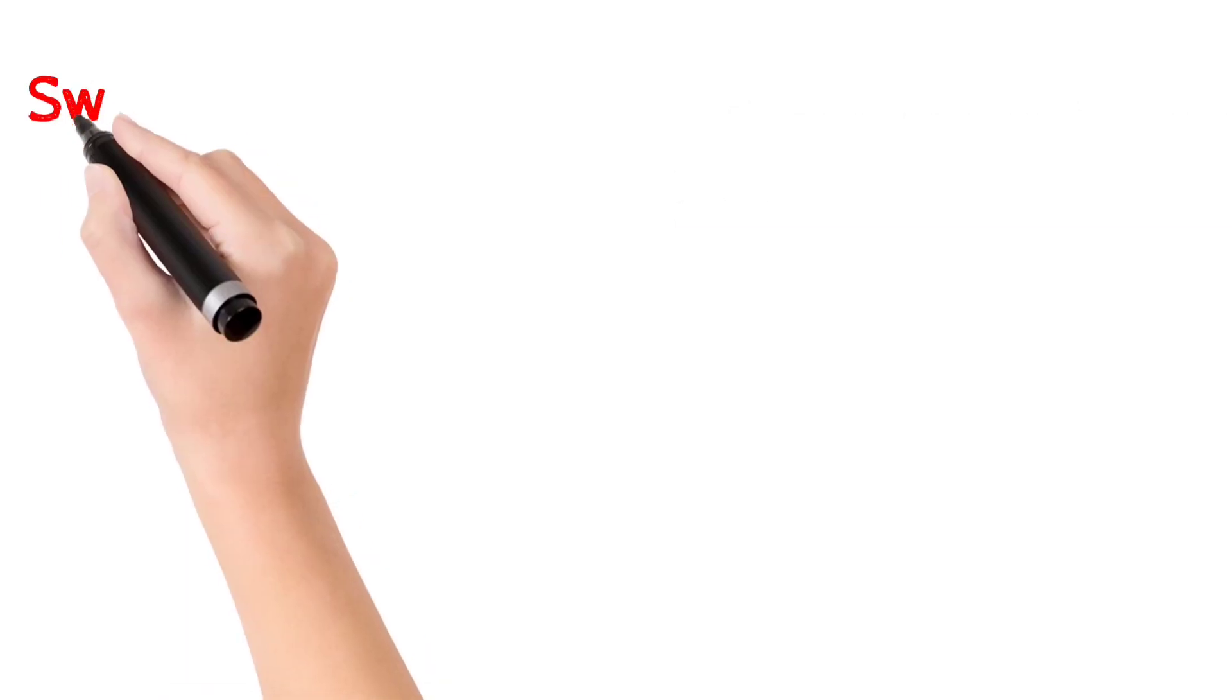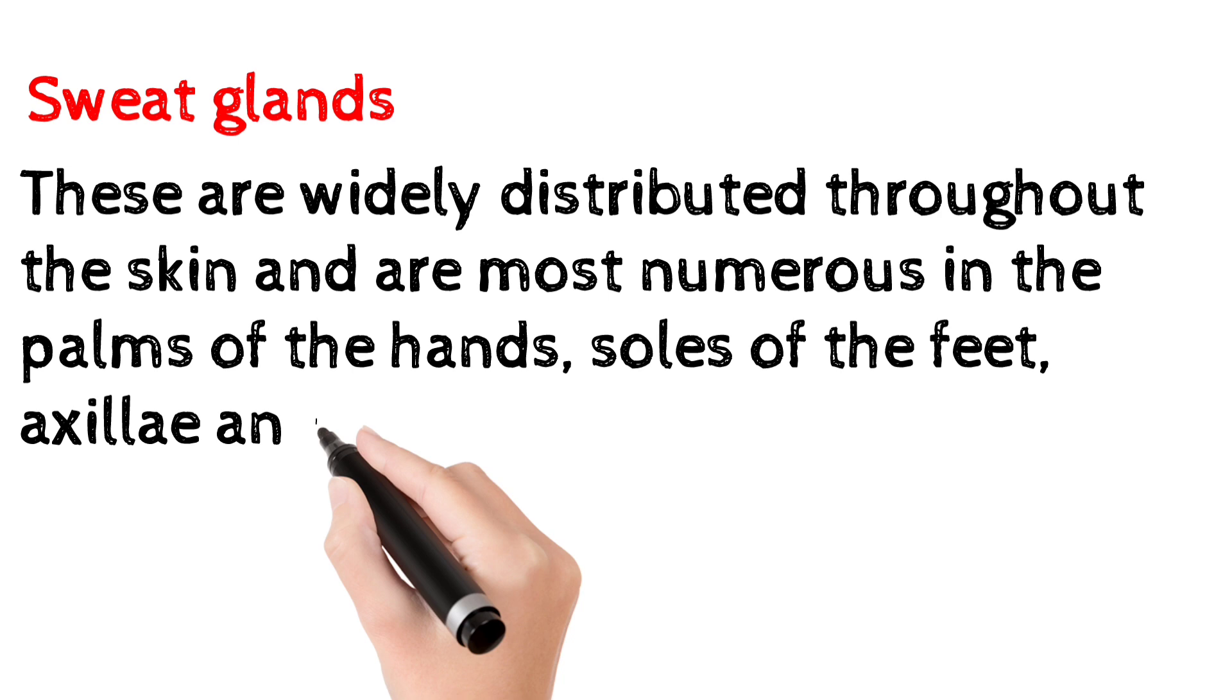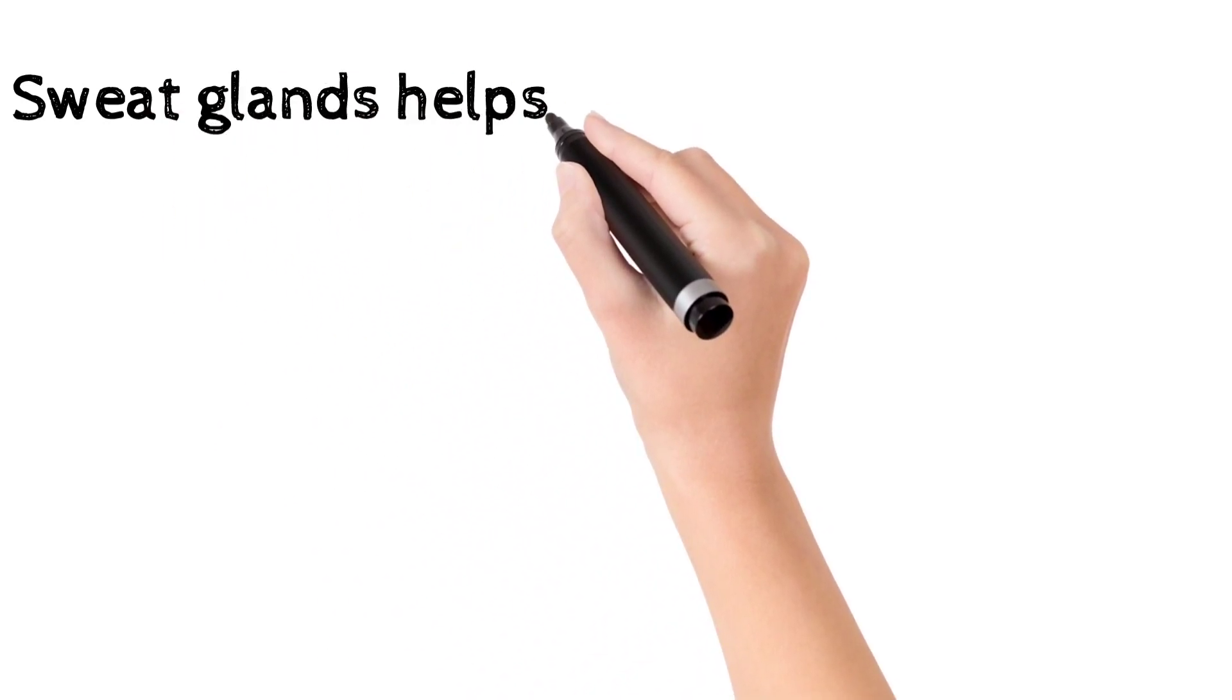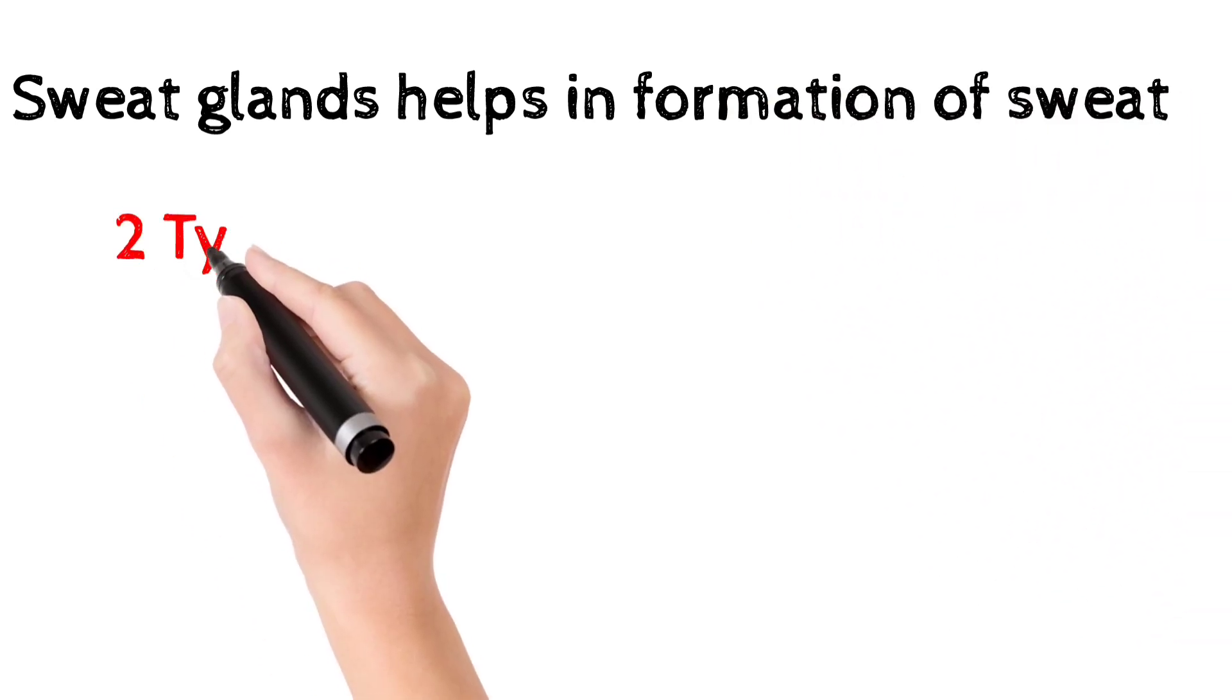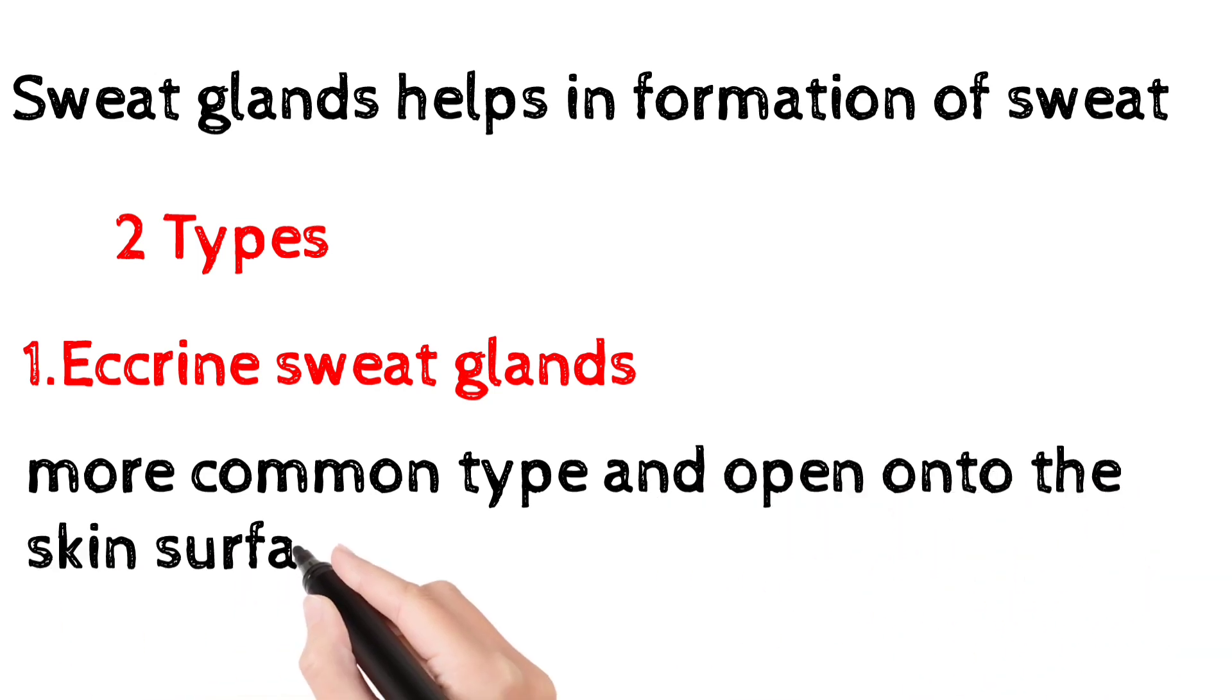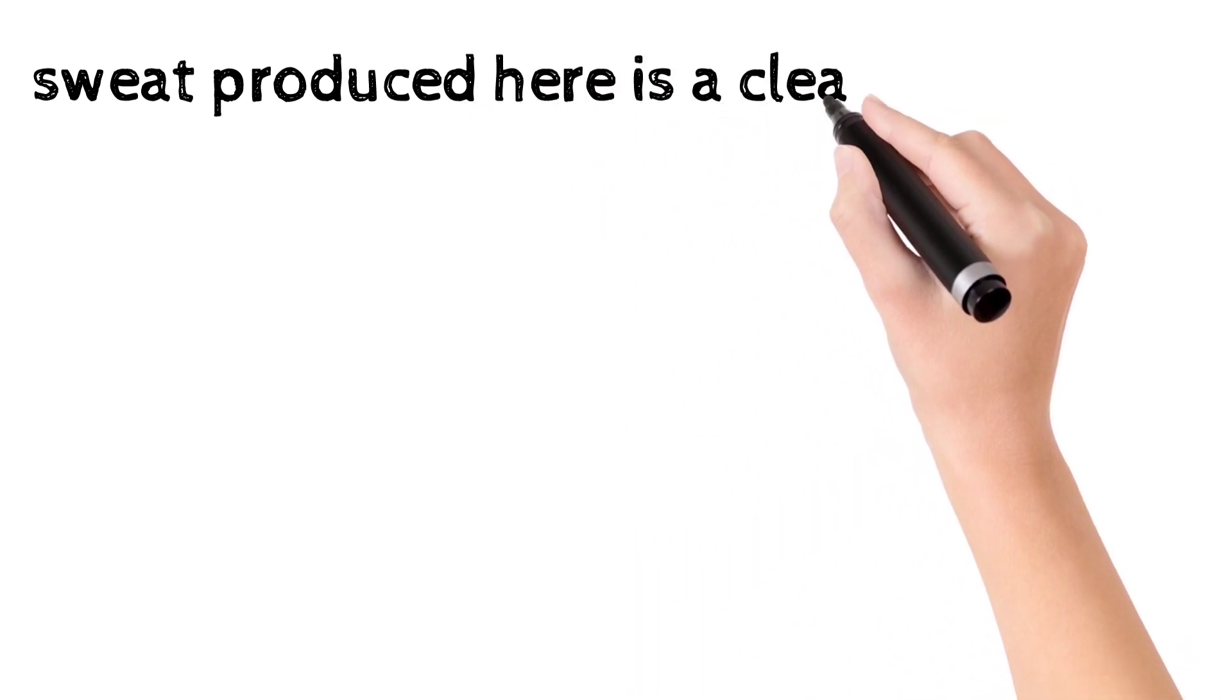Sweat glands are widely distributed throughout the skin, numerous in palms and hands, soles of the feet, axillae, and groins. They are formed from epithelial cells. There are two types of sweat glands. Eccrine sweat glands are the common type that open onto the skin surface through tiny pores and produce watery fluid.